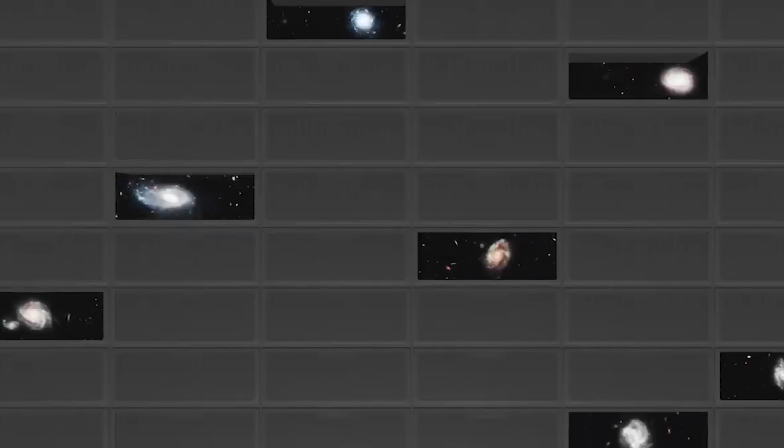Here, NIRSpec looked at 48 galaxies simultaneously, taking spectra of each of them. Using these spectra, we can then identify specific peaks that appear in all of them.